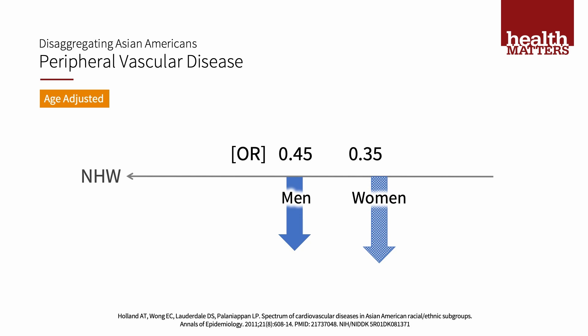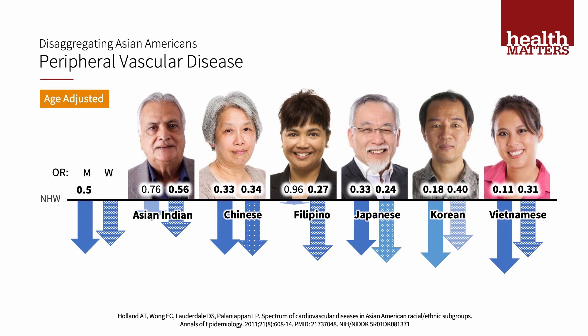Let's look at peripheral vascular disease, which is clots in the arteries of the legs, as a disease where studying Asian Americans can help us understand pathophysiology. When we compare to non-Hispanic whites and group all Asians together, for both men and women there are lower rates of peripheral vascular disease. When we disaggregate the Asian subgroups, all Asian subgroups show lower risk of peripheral vascular disease. Studying Asian subgroups may help us find new treatments for this disease for all populations.